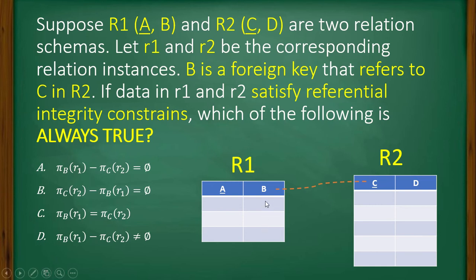in this foreign key field, that value must be there here. But it is not true that if there is something in C that must be here, it may not be there, because B is referring to C.